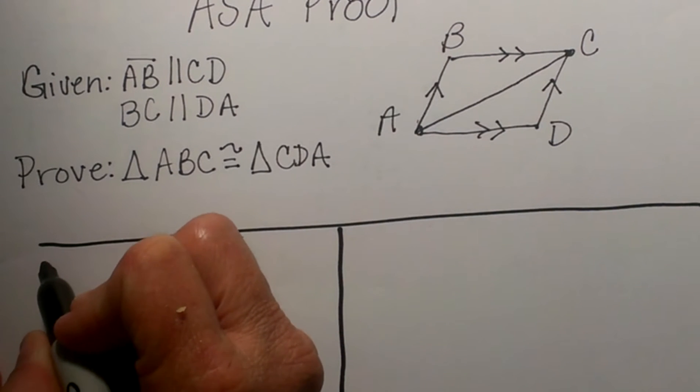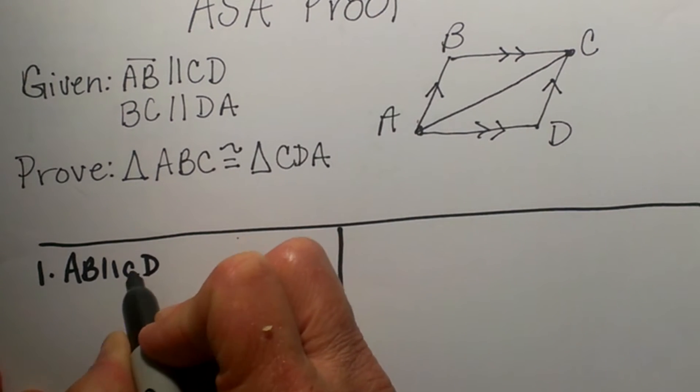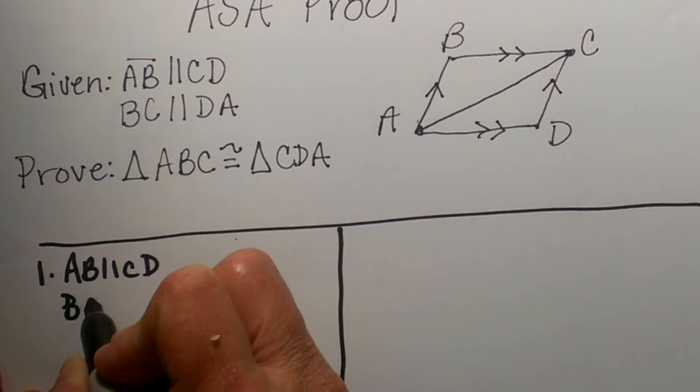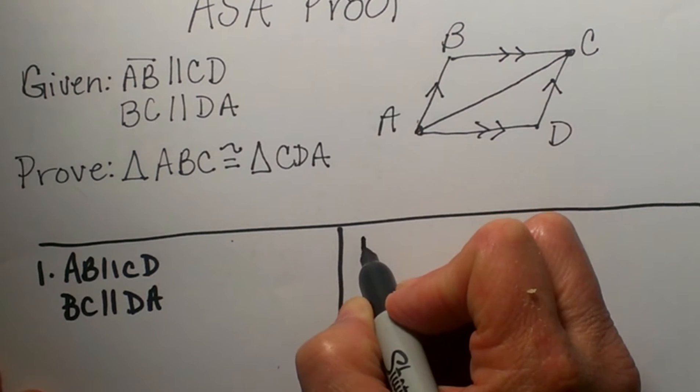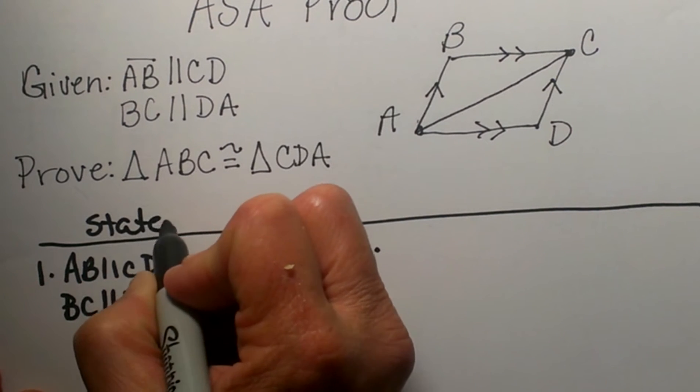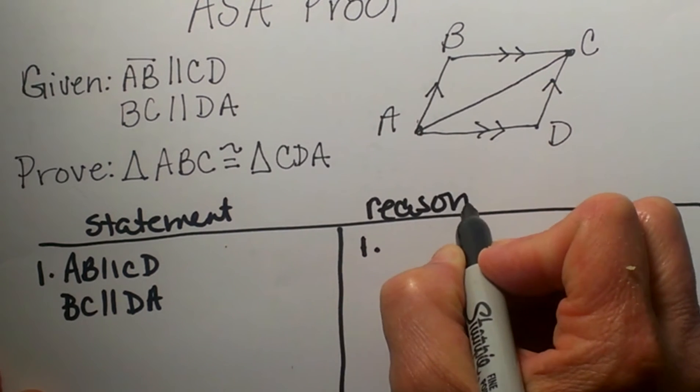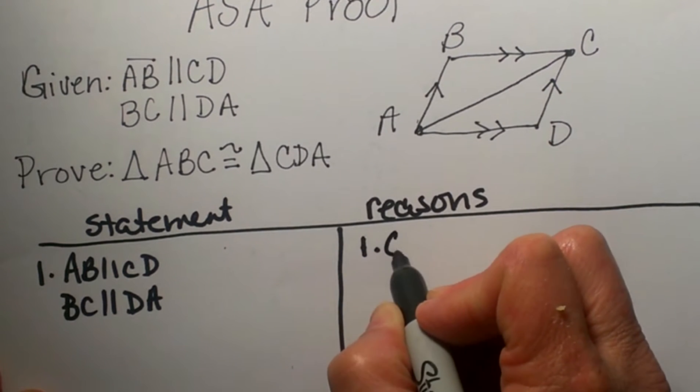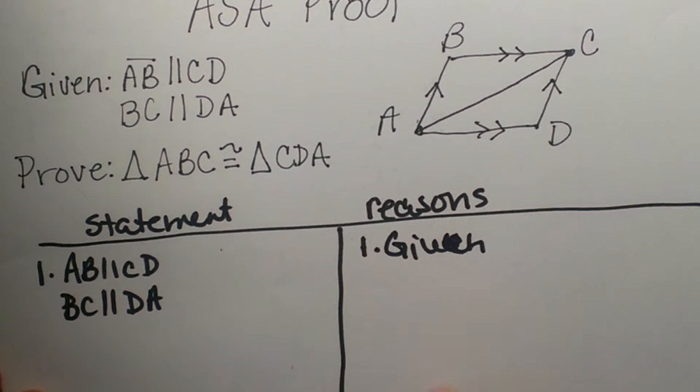What we know is we are given that AB is parallel to CD and we are given that BC is parallel to DA. Well over here we are going to give a reason as to why. So here is our statements on this side. What do we know? And then our reasons. How do we know it? Well how do we know those are parallel? Well that was given to us. So that was pretty easy. We are given that information.